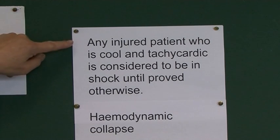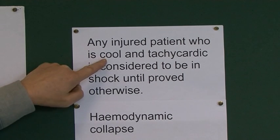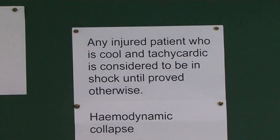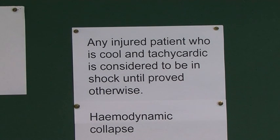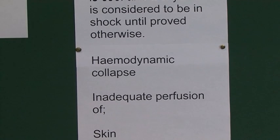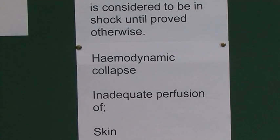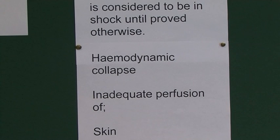Here's a good saying: any injured patient who is cold — peripherally vasoconstricted — with a compensatory tachycardia, is considered to be in shock until proved otherwise. As shock develops, there is progressive haemodynamic collapse — a progressive reduction in the amount of blood perfusing the peripheral tissues and, progressively, the central tissues and organs of the body.